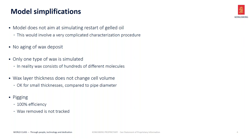For pigging, we assume 100% efficiency at wax removal, and the wax that is removed is not tracked. The reason for that is that these big chunks of wax — we don't really know how to simulate the suitable rheology. It's not like having a wax slurry with small wax particles; these big clumps of wax make it quite hard to estimate the effect on the pressure drop over the pig.